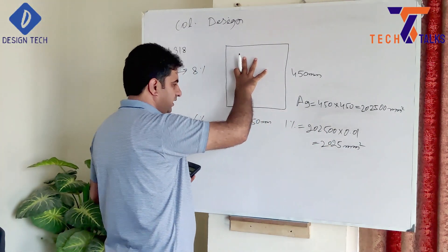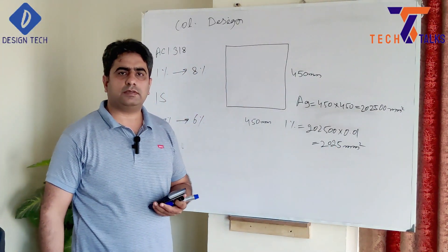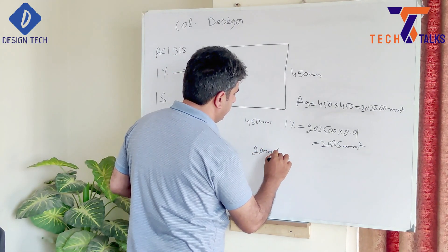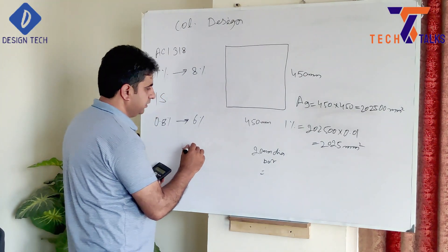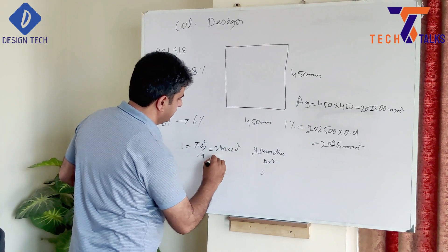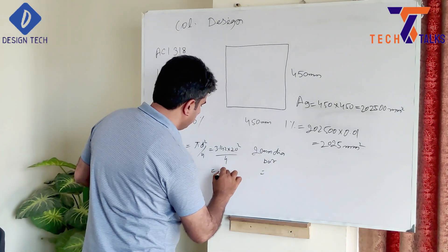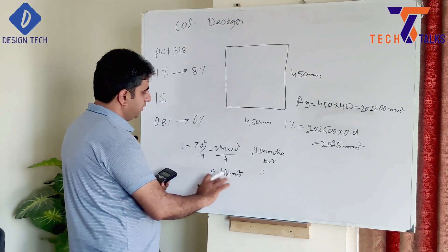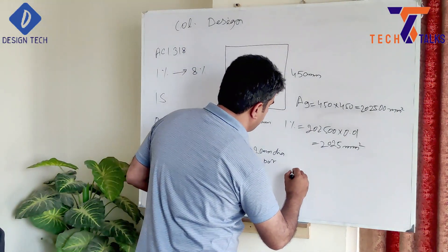Now we need to determine what bar size to provide. For example, if we consider a 20 mm diameter bar, we calculate its cross-sectional area using the formula π·d²/4 = 3.142 × 20² / 4 = 314 mm². So the cross-sectional area of a 20 mm bar is 314 mm².